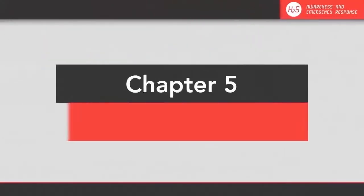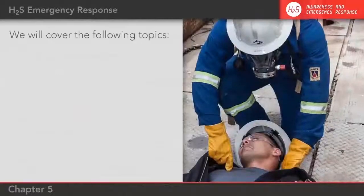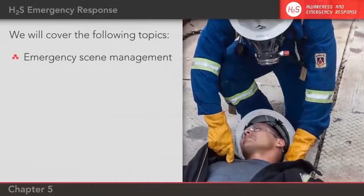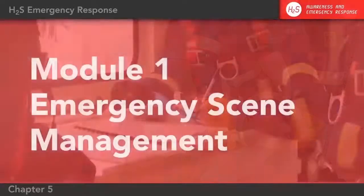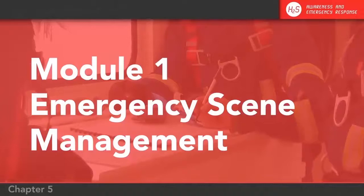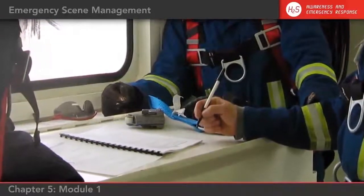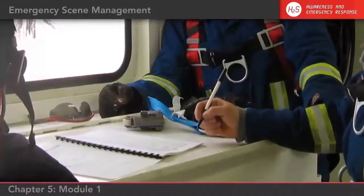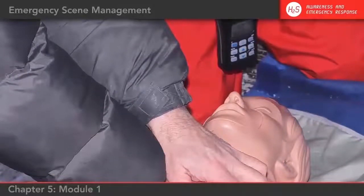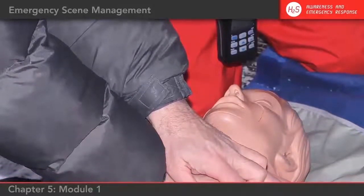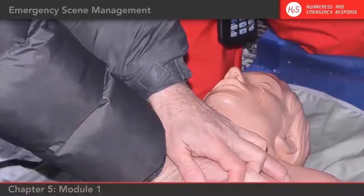Chapter 5: H2S Emergency Response. In this chapter, we'll cover the following topics: Emergency Scene Management and First Aid for H2S Exposure. Module 1: Emergency Scene Management. Before an emergency occurs, it's important to ensure that a rescue plan is developed and in place. This plan should include the identification and provision of trained on-site rescue personnel, detailed rescue procedures, as well as CPR training for anyone who works in H2S environments.